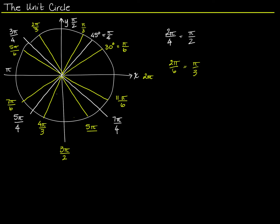Now we've seen this before, though I haven't labeled it quite this way. The only thing I need to add to make this a unit circle is that its radius is 1. When you reduce any triangle to having a hypotenuse of 1, it simplifies all the right triangle trigonometry that you need to do.